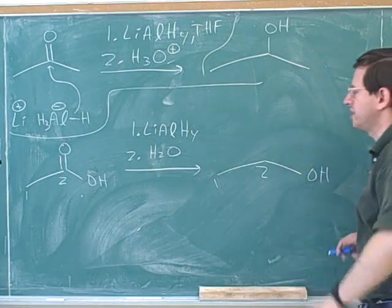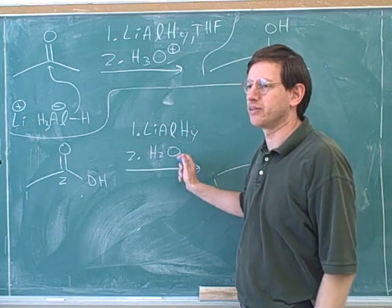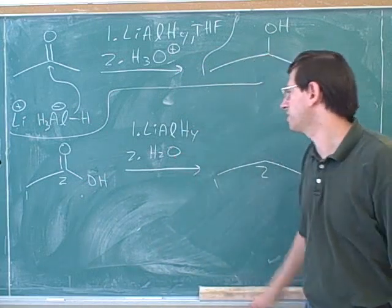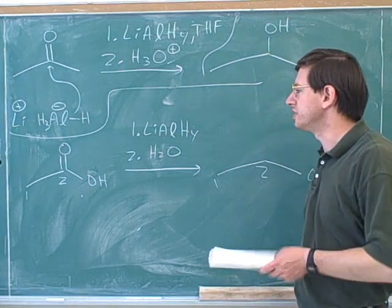All right. So when would you use this in a synthesis? Well, if you're trying to turn a carboxylic acid into an alcohol, this is the way to go. If you're trying to turn a carboxylic acid into an alcohol, you can reduce it with lithium aluminum hydride. This is considered a reduction.